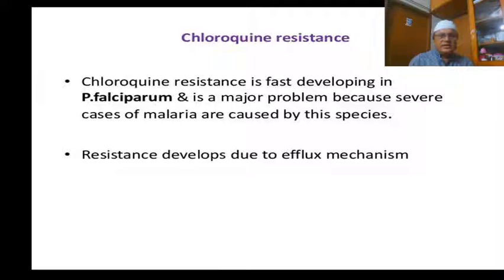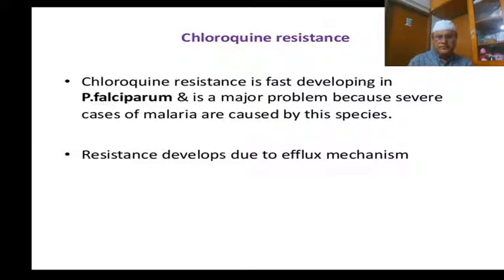Chloroquine resistance is first developing in Plasmodium falciparum and is a major problem because severe cases of malaria are caused by this species. Resistance developed due to an efflux mechanism. Chloroquine resistance is mostly in Plasmodium falciparum species, and Plasmodium falciparum malaria is the severe form of malaria.